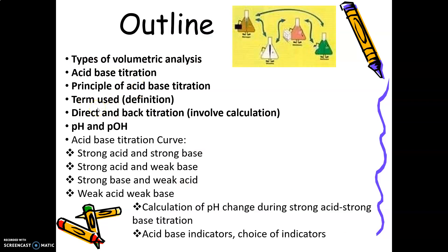Next is calculation of direct and back titration, pH and pOH. Under acid-base titration curve, there are 4 types: strong acid versus strong base, strong acid versus weak base, strong base versus weak acid, and weak acid versus weak base.